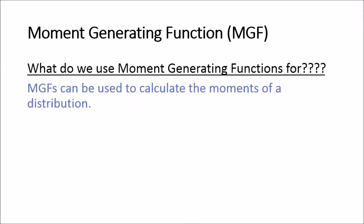Firstly, MGFs can be used to calculate the moments of a distribution — it's in the name, moment generating function. If I take the first derivative of a moment generating function, I get the first moment. The second derivative gives the second moment. So MGFs are a very quick tool to calculate the moments of a distribution, which is very helpful in statistics when you need the third or fourth moment of a distribution. You simply use the moment generating function — it can quickly give you the result if you know how to do derivatives.